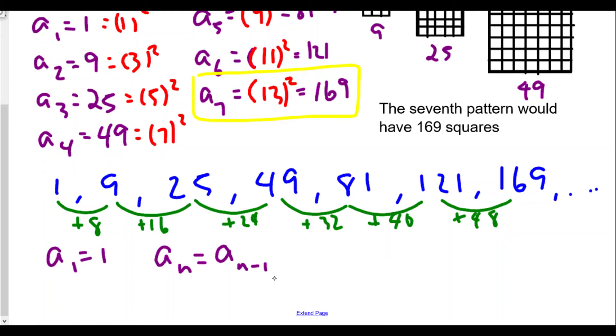All right and so we're gonna say an equals the previous number, a sub n minus one plus, okay now here's the thing. For the first term, well for the second term we want to add eight, so maybe we'll say four times n. Let's try this out, four times n. We'll see if it works out, if it doesn't work out we'll make adjustments. Okay, I definitely don't want to add eight every single time.